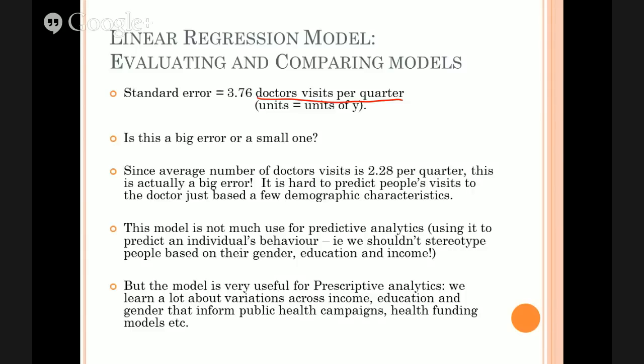You need a handle on whether that's a good model or bad model. Is that an accurate prediction or not? We go back to the original y data and see that the average number of doctor's visits people make is 2.28. Your average person goes to the doctor a bit over two times per quarter. We're trying to use characteristics like education, income, gender, and time of year to predict how many times a particular person will go to the doctor, and we're going to be out by an average of 3.76. That's not great considering the average value itself is 2.28.